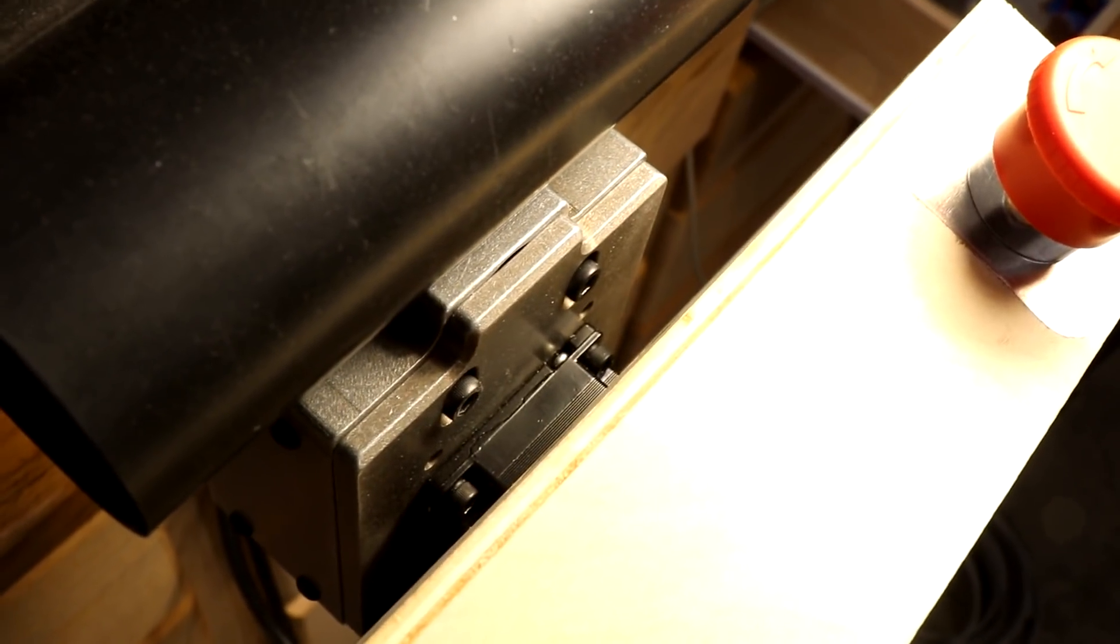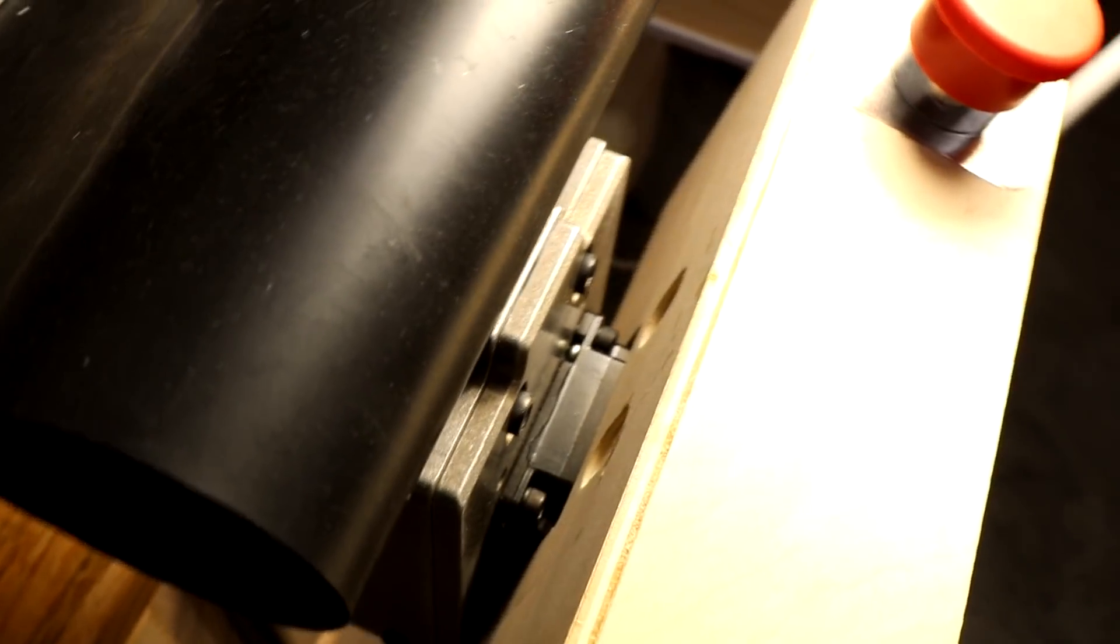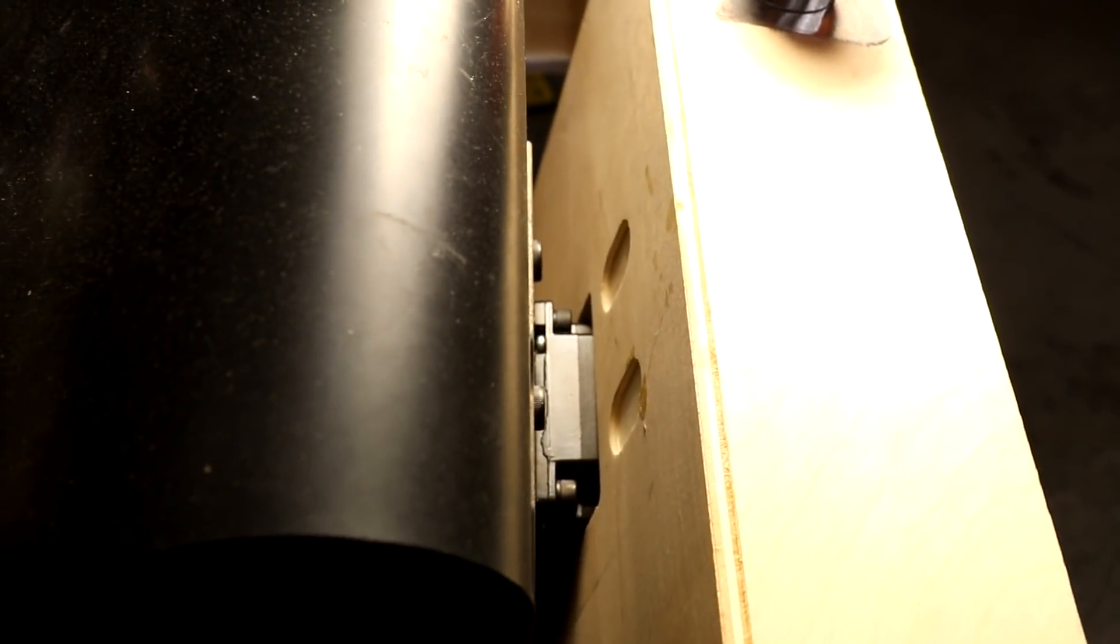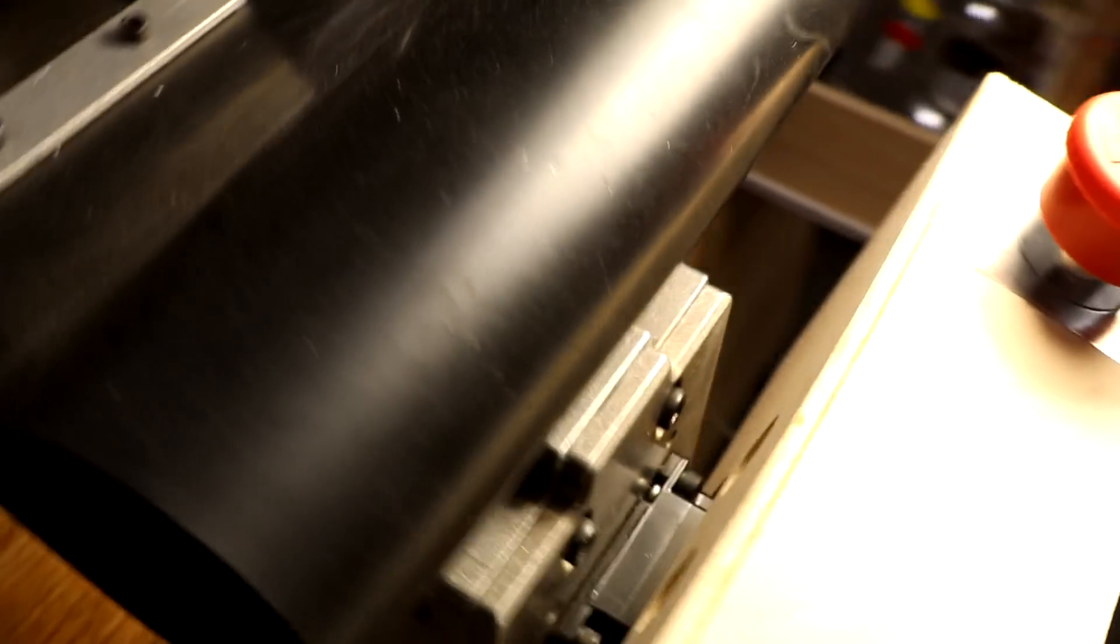You can see that plate that the stepper motor attaches to and the two socket head cap screws. The control box will press against that plate and will clamp onto the stepper motor.